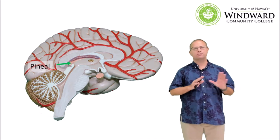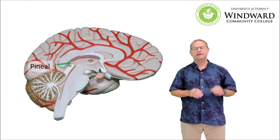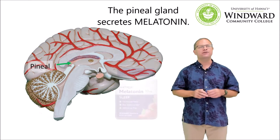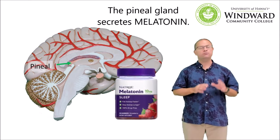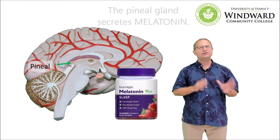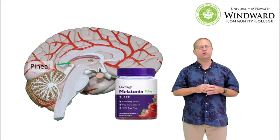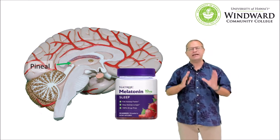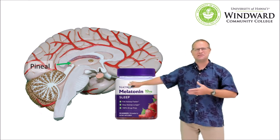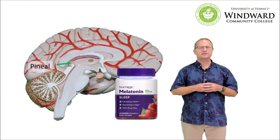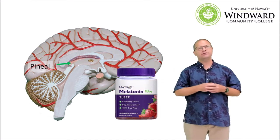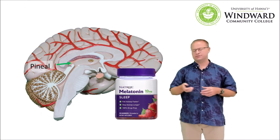The final endocrine gland in the brain is the pineal gland. The pineal gland secretes the hormone melatonin. You've probably heard of melatonin — you may see it at the grocery store or drugstore. Melatonin is an amino acid hormone that helps to regulate circadian rhythms or wake-sleep cycles. People having problems sleeping can take exogenous melatonin to help correct sleep disorders.